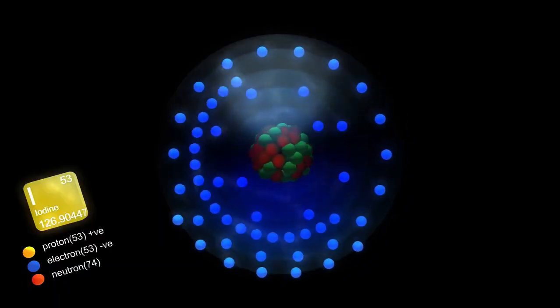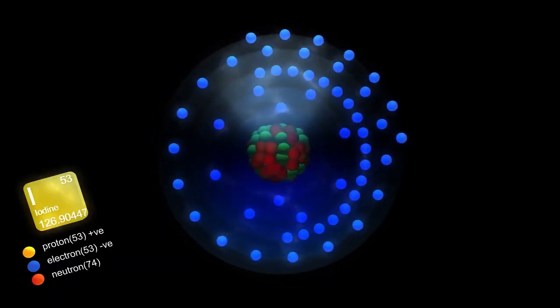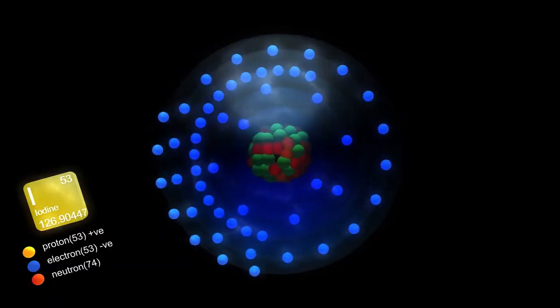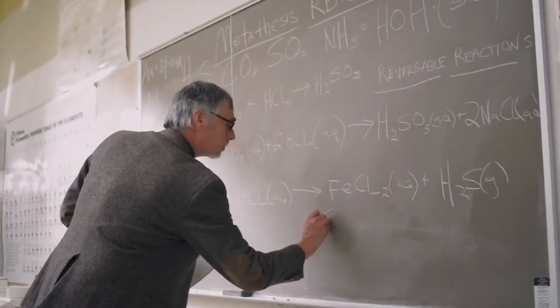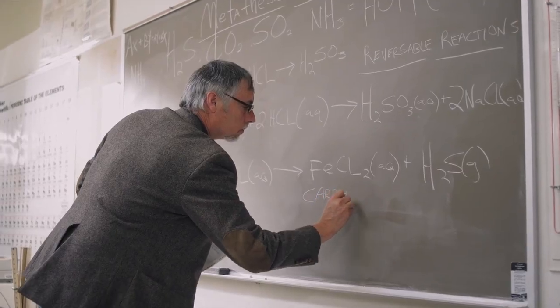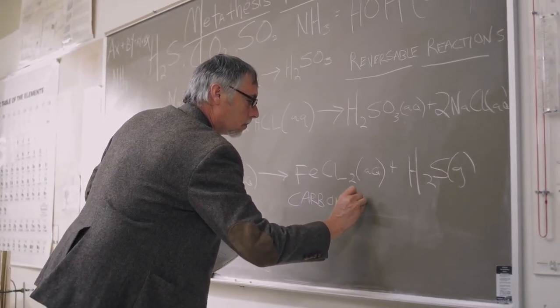These fermions interact through three types of fields: electromagnetism involving photons, the strong nuclear force involving gluons, and the weak nuclear force involving W and Z bosons. According to Cambridge theoretical physicist David Tong, without these force fields, matter particles would drift aimlessly in the universe without interactions or interesting behaviors.